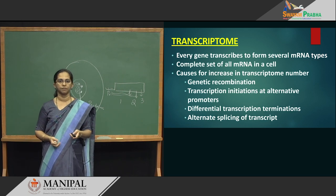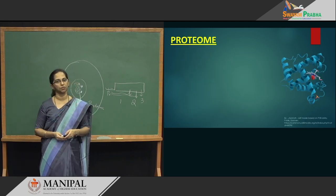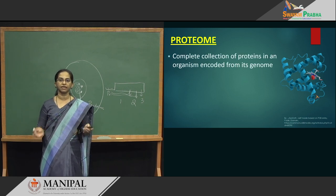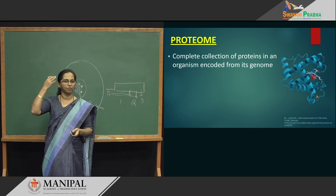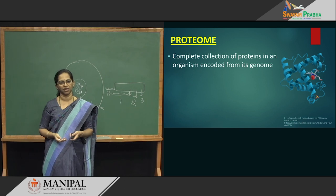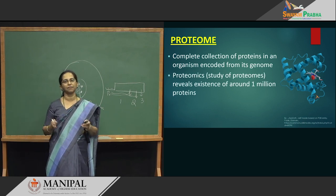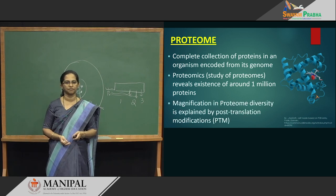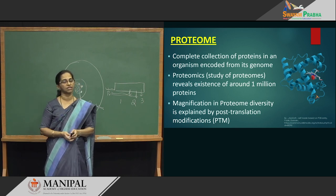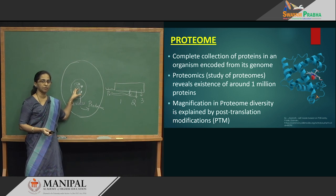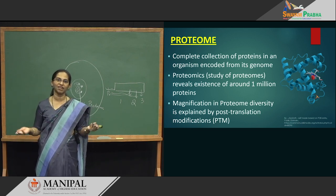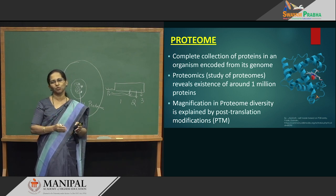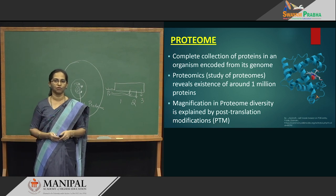What is proteome? Proteome means all proteins in human cells — it is the complete collection of proteins in an organism encoded in its genome. All the proteins that we have from head to toe is the proteome of a human body. Proteomics is just a branch of science which deals with the study of proteins. How many proteins do we have? With just 20,000 genes we have about 1 million proteins. We have magnified the number — and how did we magnify this number? That is what we have to understand today — and that is post-translational modification of proteins.